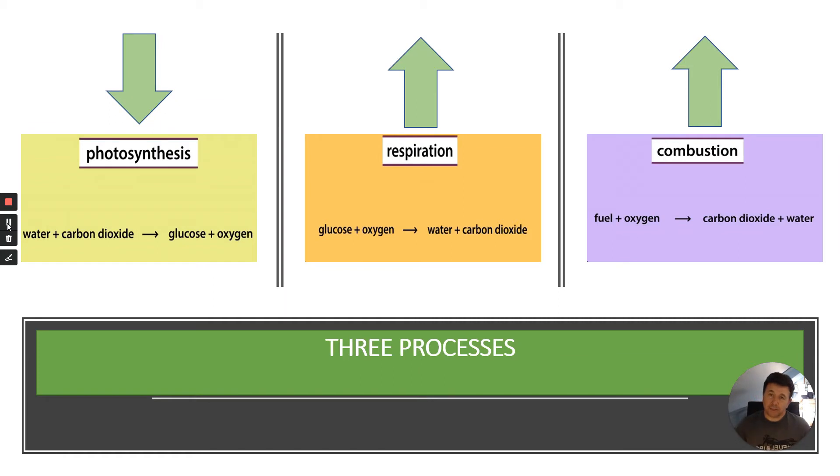In the carbon cycle there are three main processes that you'll be asked about in the exam. First, photosynthesis, where water and carbon dioxide is converted into glucose and oxygen. This removes carbon dioxide from the atmosphere.